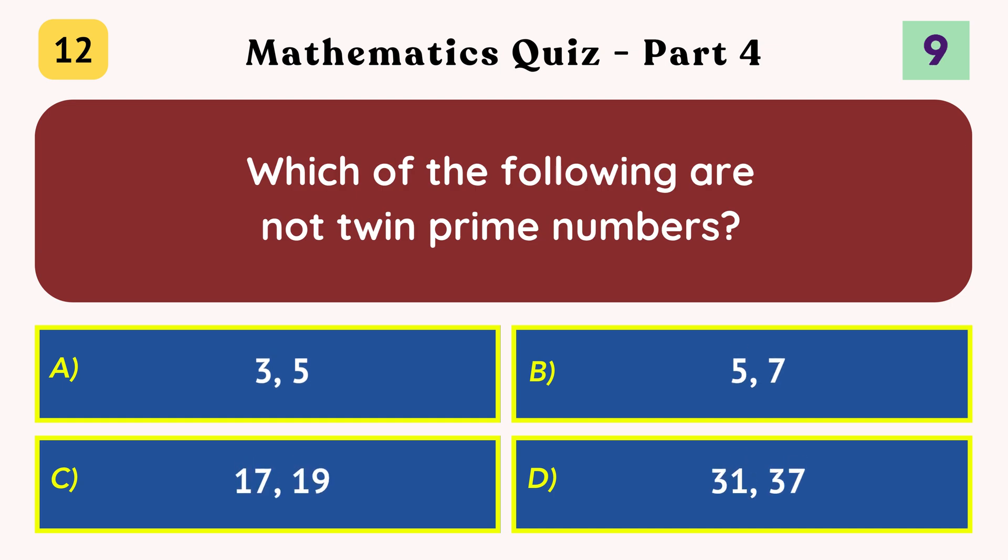Which of the following are not twin prime numbers? 31, 37.